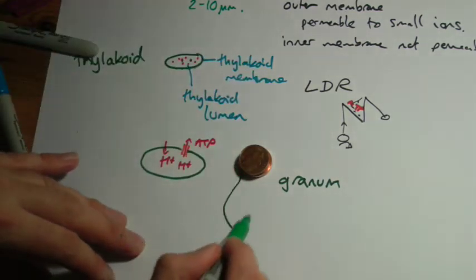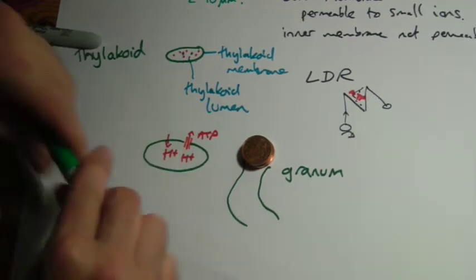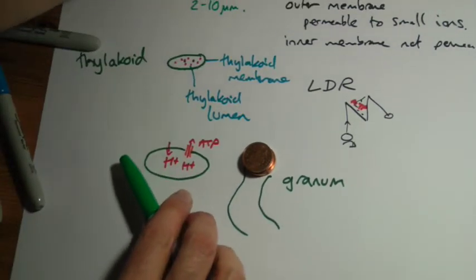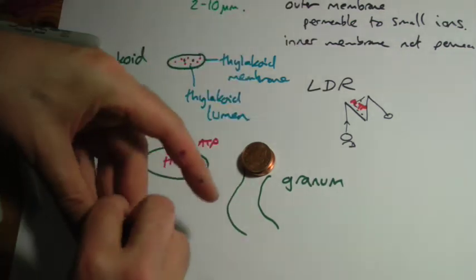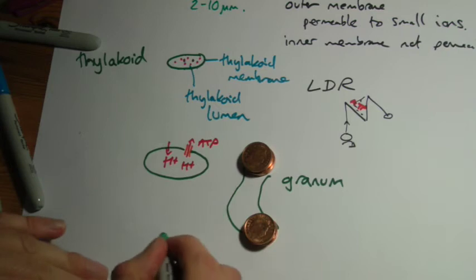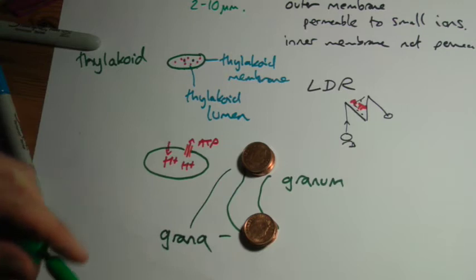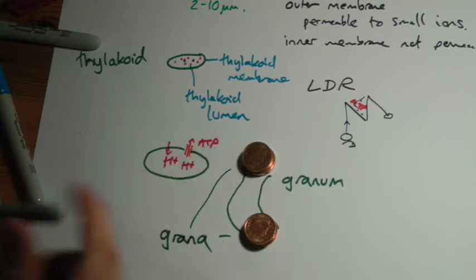And let's try and just use a bit of three-dimensional drawing. If I have more than one of these piles, so now I have two granum, but because it's a plural I can say that I now have two grana. Grana is the plural of granum. Granum is a pile of the thylakoids.